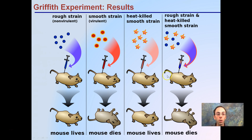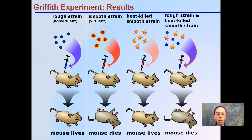In the experiment, the rough strain — non-virulent — was purified, injected into a mouse, and after a period of time the mouse was just fine. The smooth strain is virulent and causes disease — when injected into a mouse, sadly the mouse dies.